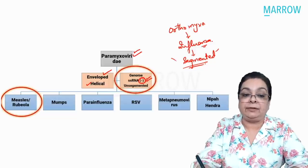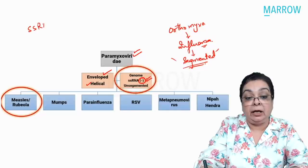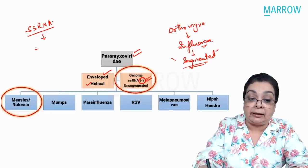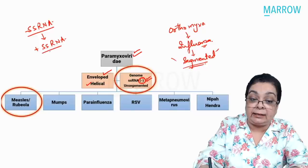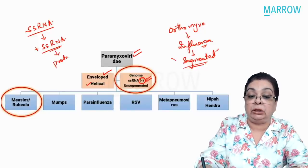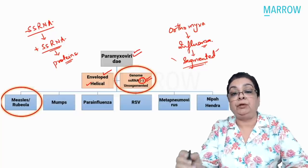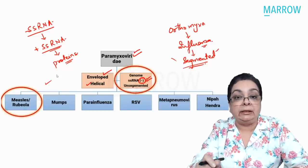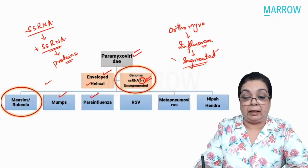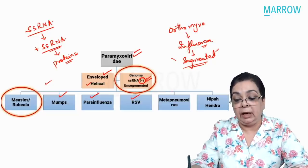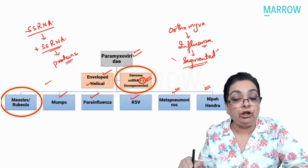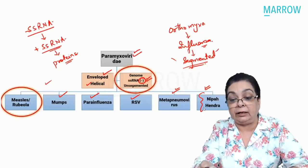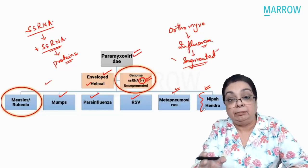Negative sense means the single-stranded RNA cannot be directly translated by ribosomes. It must first be converted into a positive sense strand before translation into proteins in the host cell. Important members of Paramyxoviridae include measles (also called rubeola), mumps, parainfluenza, respiratory syncytial virus, and newer additions: metapneumoviruses and the zoonotic paramyxoviruses Nipah virus and Hendra virus. Remember Nipah — that's a paramyxovirus.